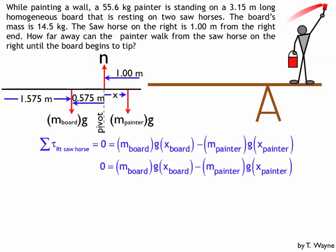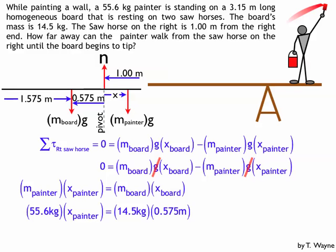Now at this point, it's all equal to zero. The g's will divide out both sides of the equation. I'll move part of the expression over to the other side, substitute in my numbers that I have up there, do a little bit of math, and I find the distance from the right support is 0.150 meters.